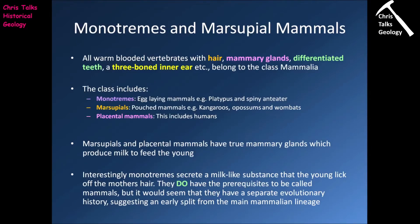Mammals are warm-blooded vertebrates that possess a range of distinct features including hair, mammary glands, differentiated teeth and a free-boned inner ear. All warm-blooded vertebrates that share these traits are classified in the group Mammalia. The group Mammalia has three subclasses: the monotremes, the marsupials and the placental mammals.